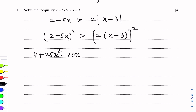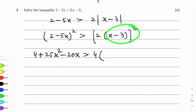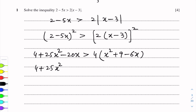Greater than — on the right, 2 squared is 4, and we expand (x minus 3)(x minus 3) which gives x squared plus 9 minus 6x. Multiplying by 4, the full inequality becomes: 4 plus 25x squared minus 20x is greater than 4x squared plus 36 minus 24x.